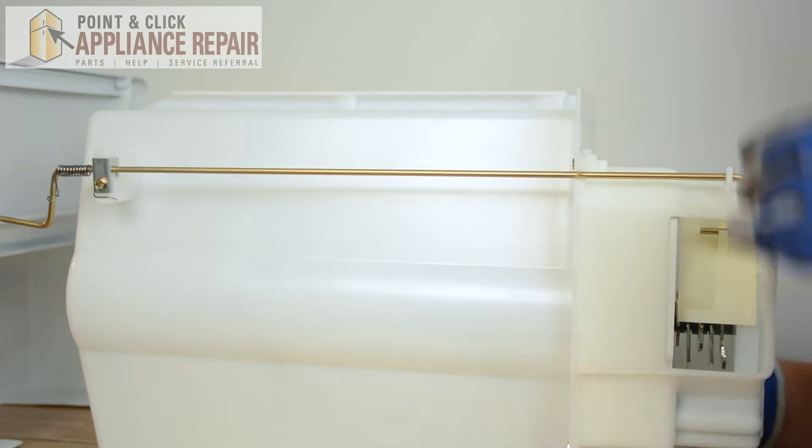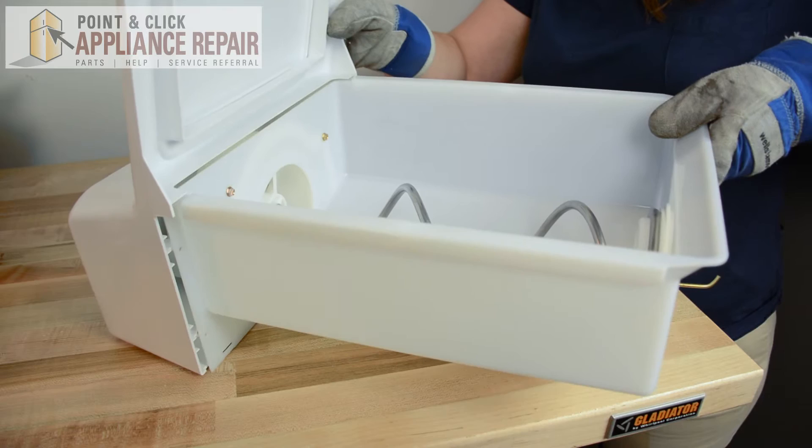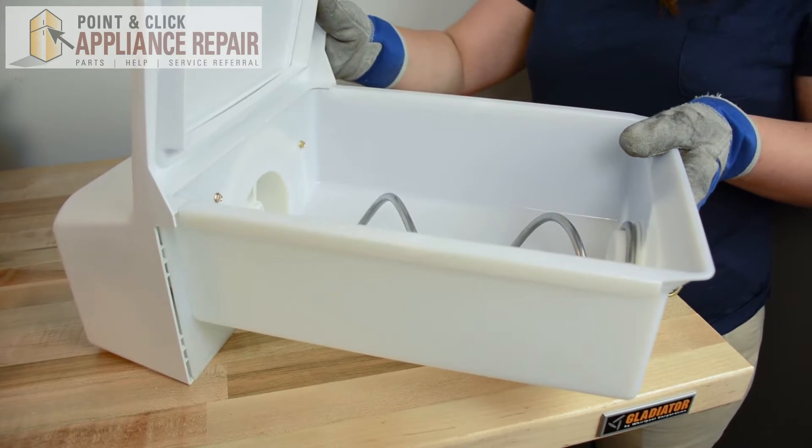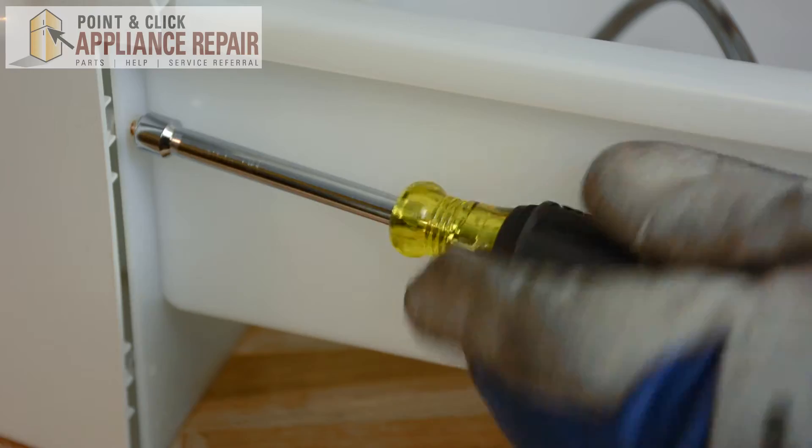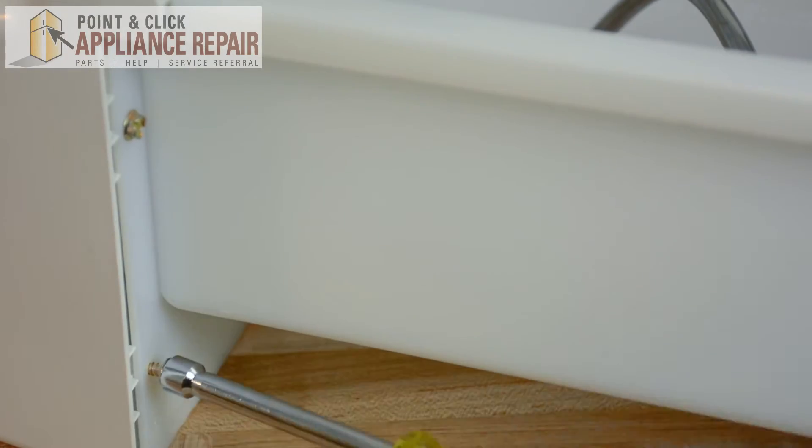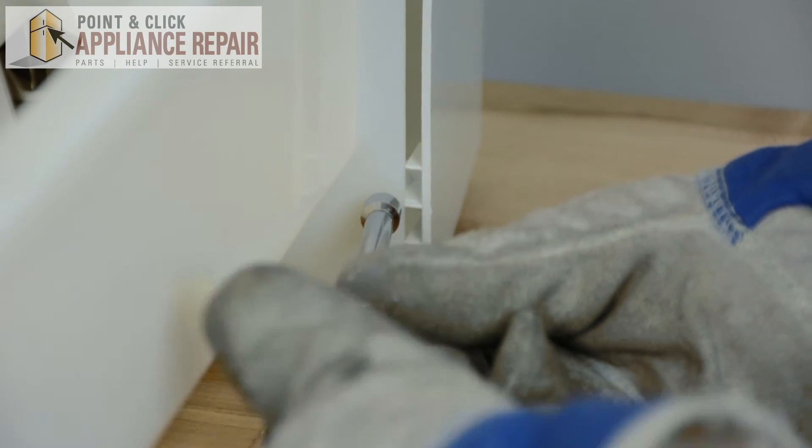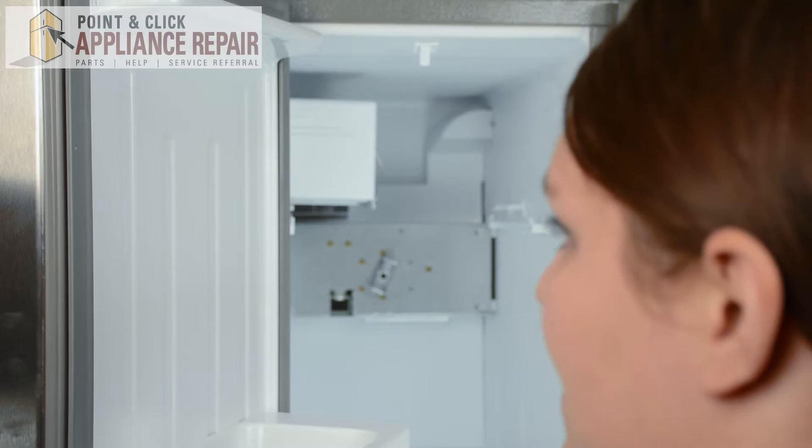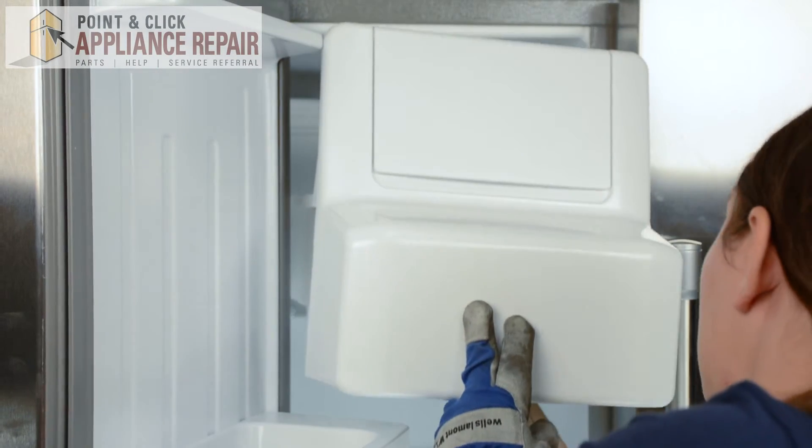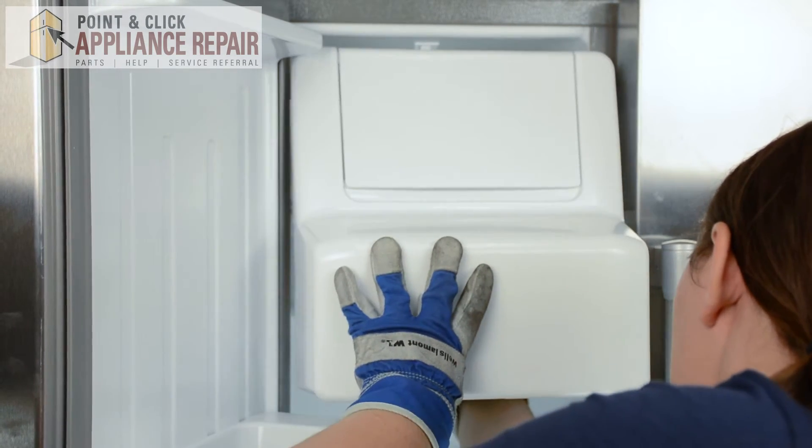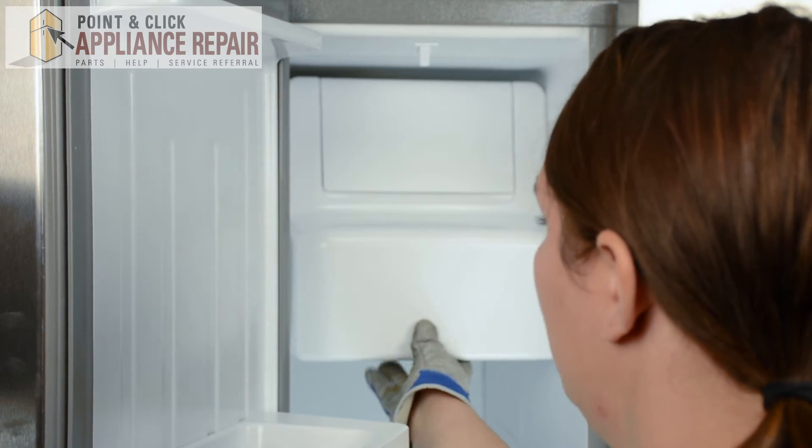And that's it. We can put the front of the dispenser back on. Bring in the front of the dispenser, line up the holes on either side, and we can replace the screws. And we can replace the ice dispenser. Line it up with the tracks and push it into place.